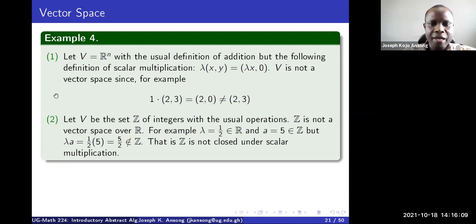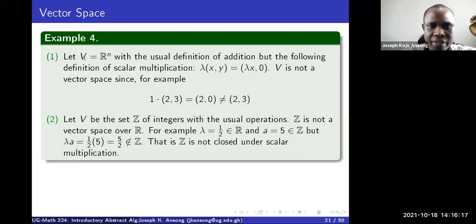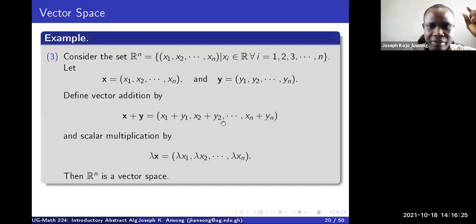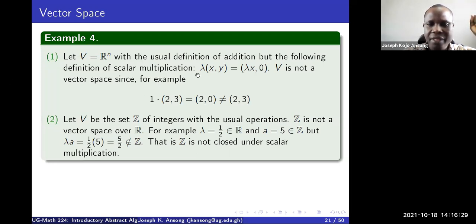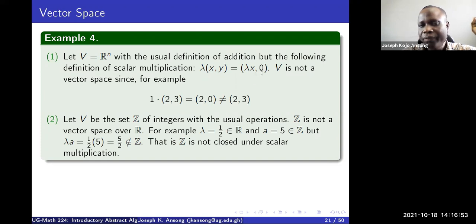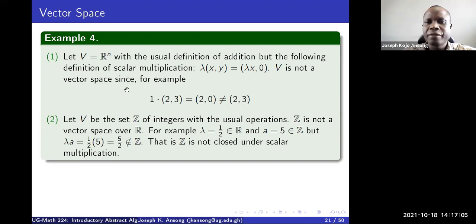Now, how do you show that something is not a vector space? Just find one example that violates one of the axioms. Here's one: let V be ℝ² with the usual component-wise addition, but scalar multiplication defined so that lambda times (x, y) gives (λx, 0) — the second component always becomes zero.